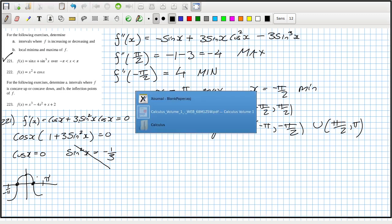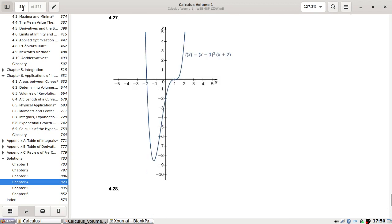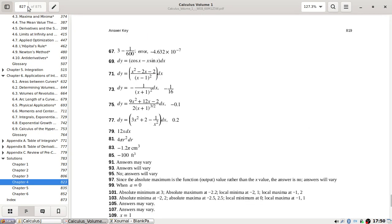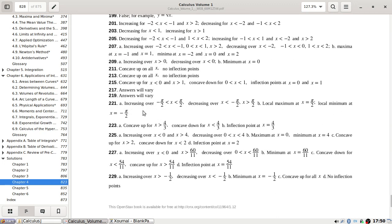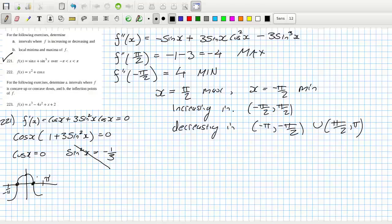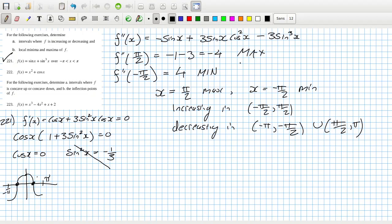Actually, I can check the answer, which I do want to do. 221, increasing, yep. Decreasing, and technically they should have the bounds at pi, but anyways. Local max at pi over 2. Yeah, okay, that checks out.